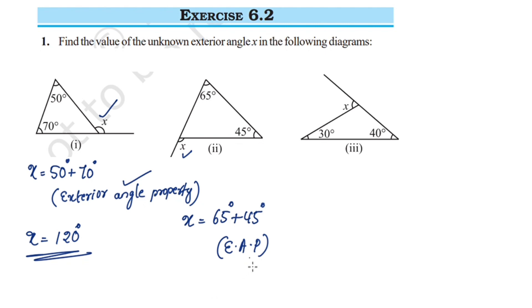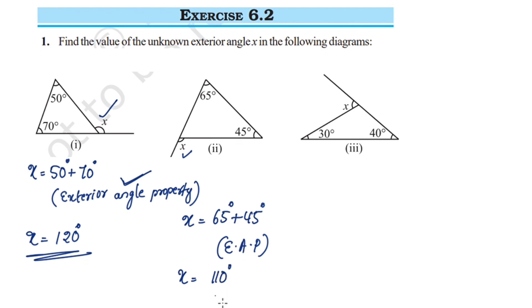Using the exterior angle property, x is equal to 65 degrees plus 45 degrees. You can write this property. X is equal to 110 degrees, since 65 plus 45 equals 110 degrees.